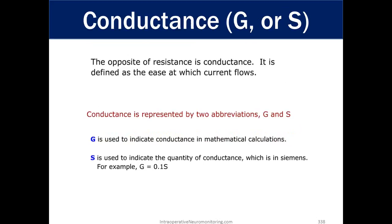Conductance. The opposite of resistance is conductance. It is defined as the ease at which current flows. Conductance is represented by two abbreviations, G and S. G is used to indicate the conductance in mathematical calculations, where S is used to indicate the quantity of conductance, which is Siemens. For example, G equals 0.01 Siemens.